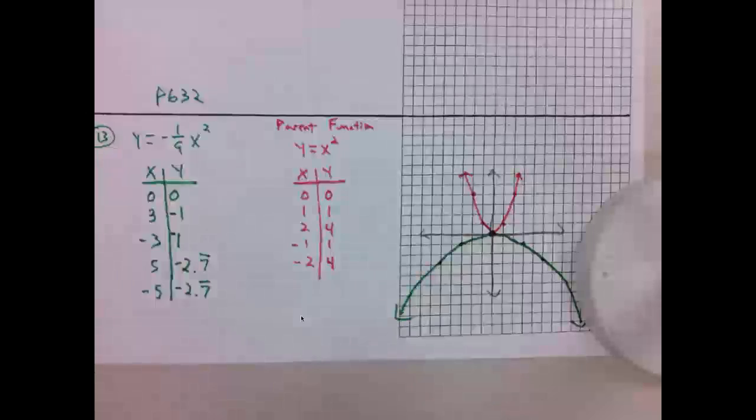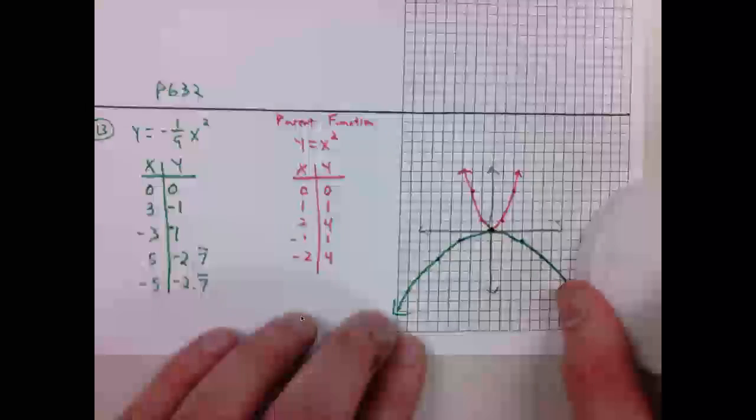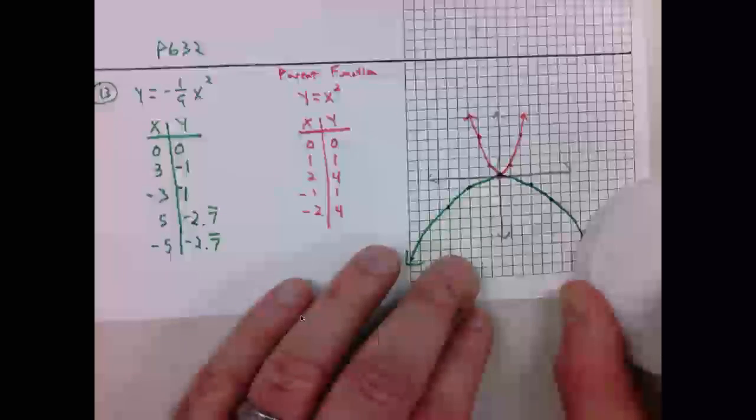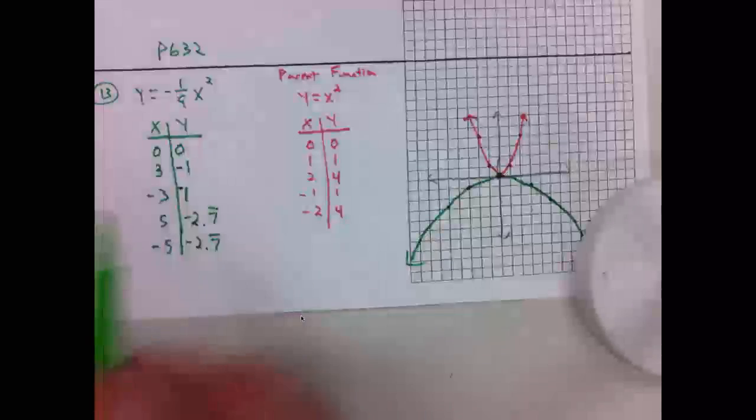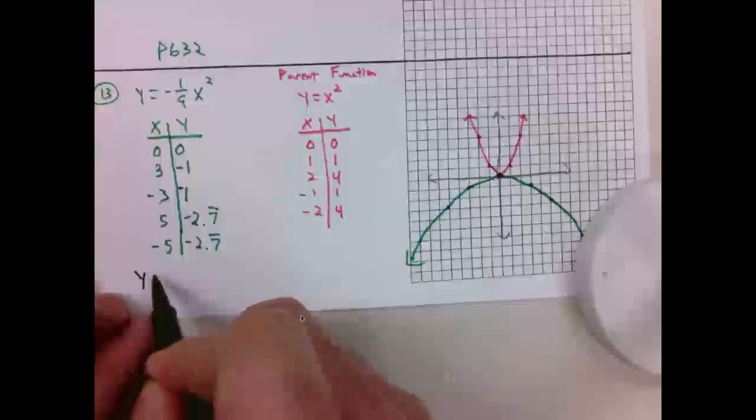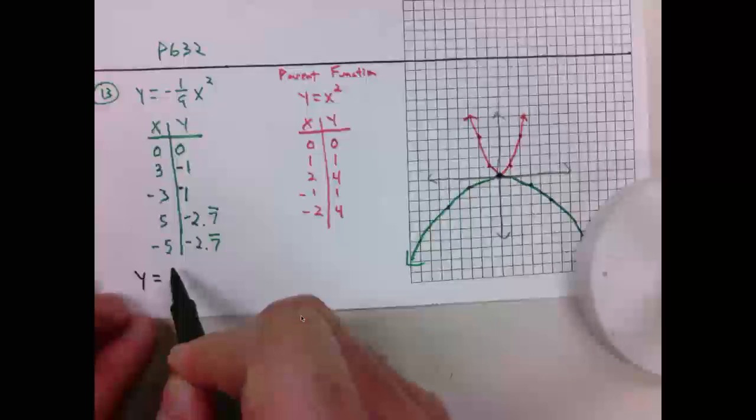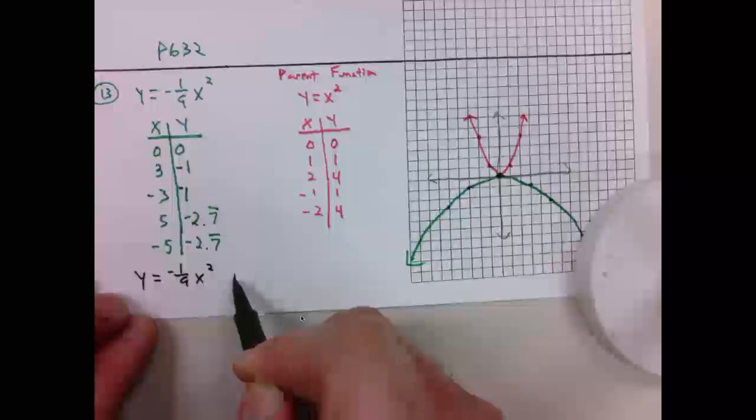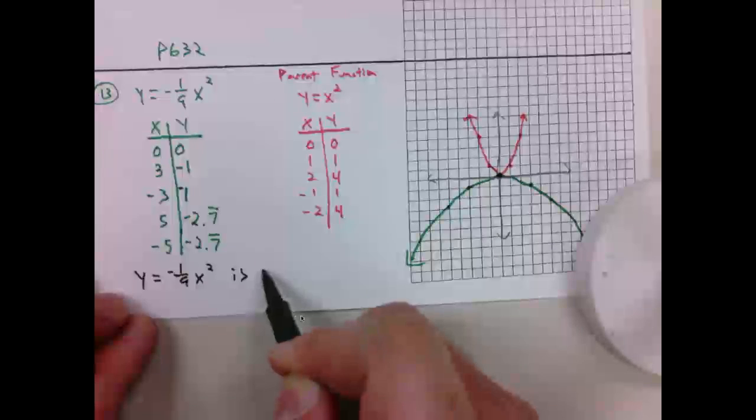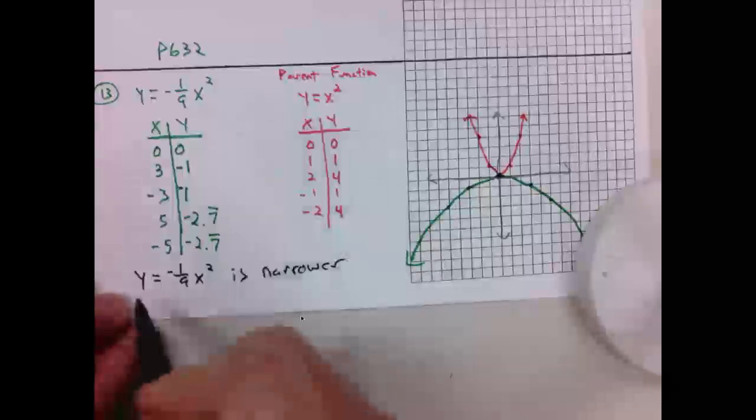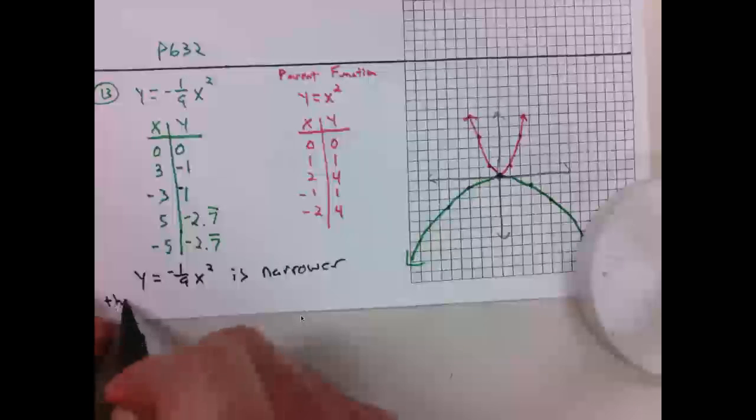One sentence to compare these two parabolas. Y equals negative 1/9 X squared is narrower, narrower than...